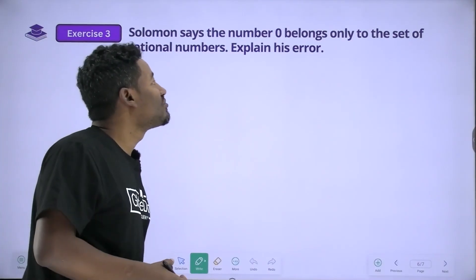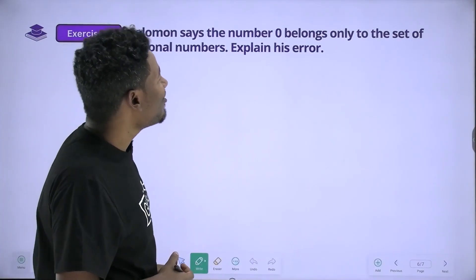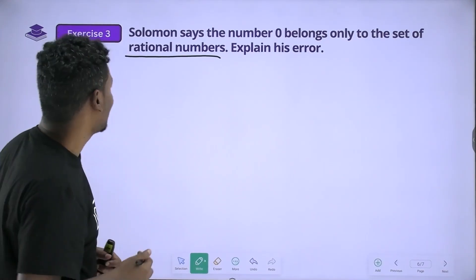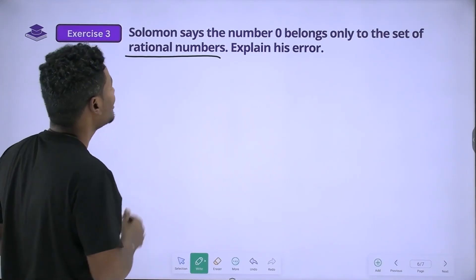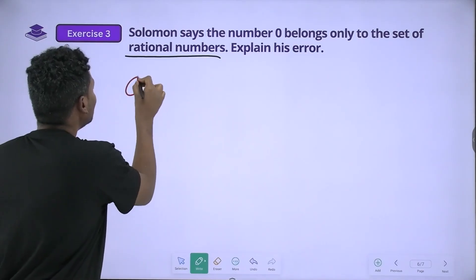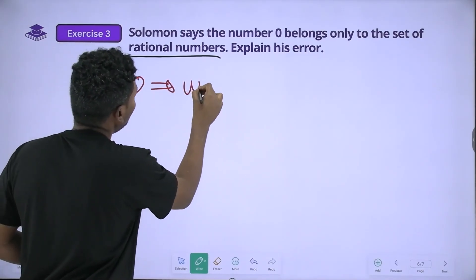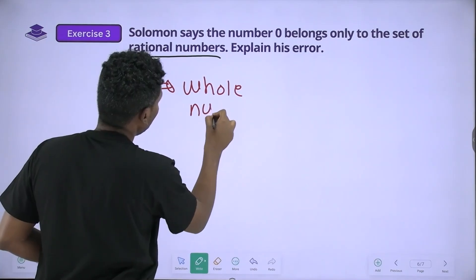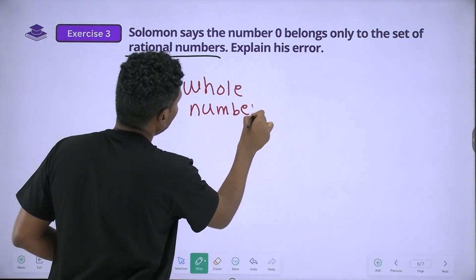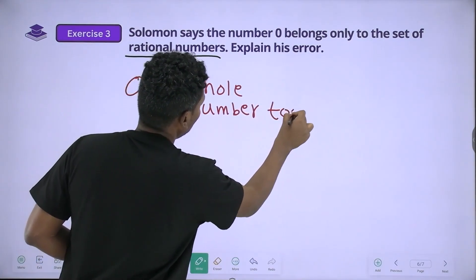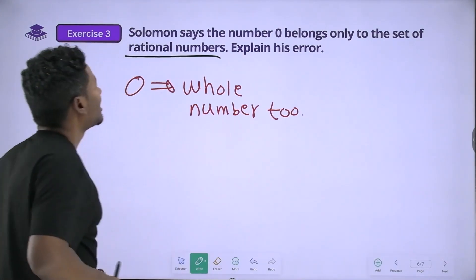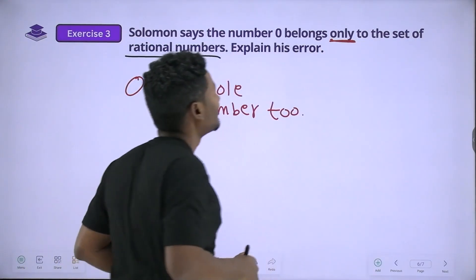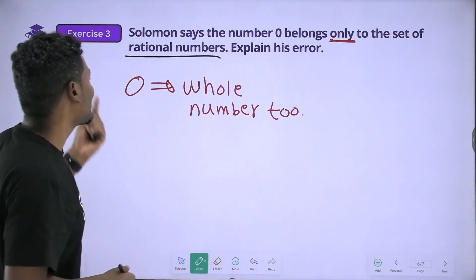Salomon says the number zero belongs to only the set of rational numbers. Explain his error. His error: zero is a whole number too. Zero belongs to more than just the set of rational numbers.